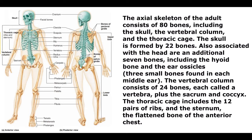The skull is formed by 22 bones. Also associated with the head are an additional seven bones, including the hyoid bone and the ear ossicles — three small bones found in each middle ear. The vertebral column consists of 24 bones, each called a vertebra, plus the sacrum and coccyx. The thoracic cage includes the 12 pairs of ribs and the sternum, the flattened bone of the anterior chest.